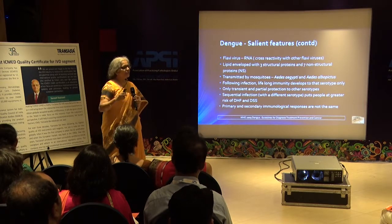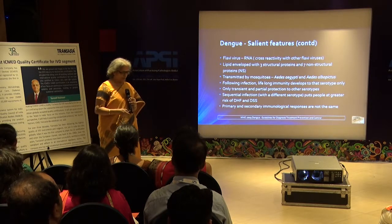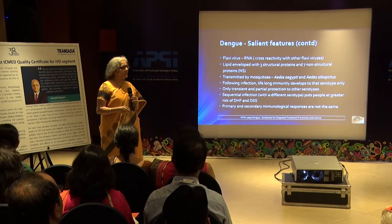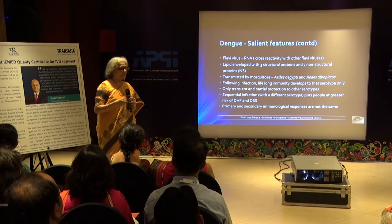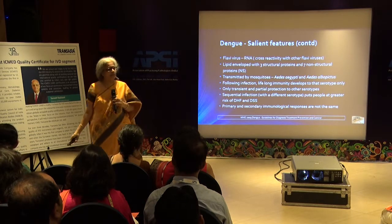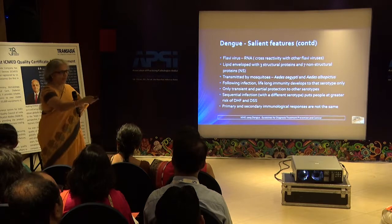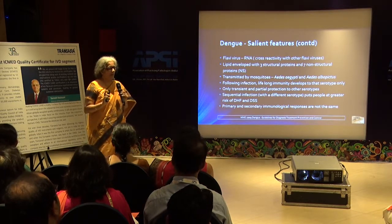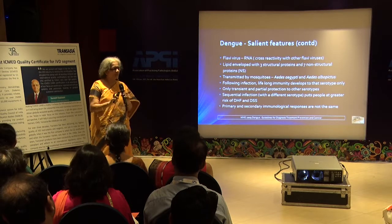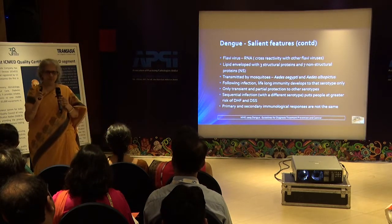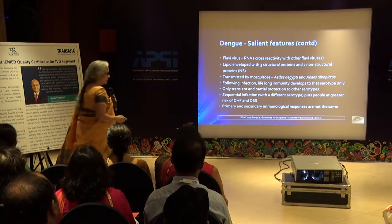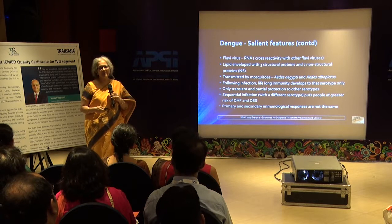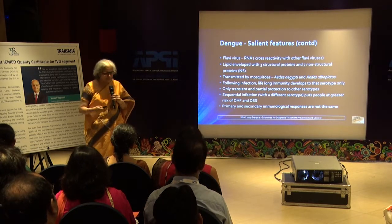Virologically, dengue is a flavivirus — and there are a whole lot of flaviviruses: West Nile virus, Japanese B encephalitis, yellow fever virus, and the most recent addition, Zika virus. The antibodies generated to any given flavivirus are cross-reactive, at least for a short duration, and there is always the possibility of an amnestic response. Detecting antibodies in a single test is just not enough to label a patient as being infected with any of these flaviviruses.